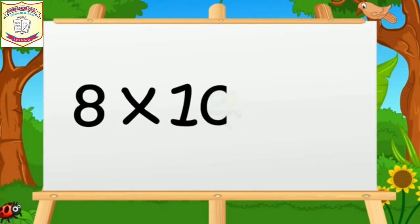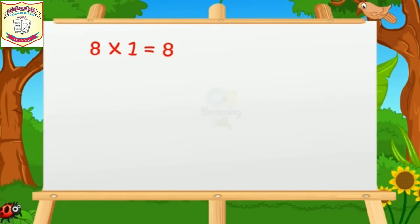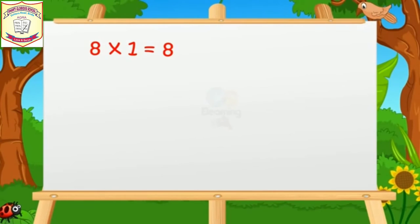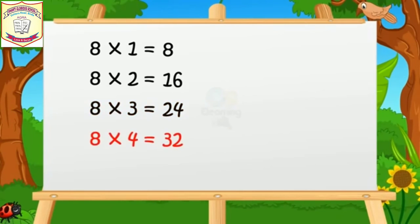Eight tens are eighty. Eight ones are eight. Eight twos are sixteen. Eight threes are twenty-four. Eight fours are thirty-two.